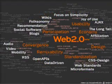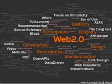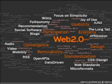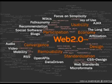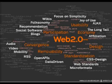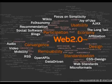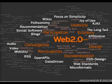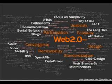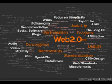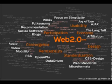With its allusion to the version number that commonly designates software upgrades, Web 2.0 was a natural way to indicate an improved form of the World Wide Web, and the term has been in occasional use for several years. The participants of the first Web 2.0 conference in October 2004 assembled examples of Web 1.0 and Web 2.0 applications and software.